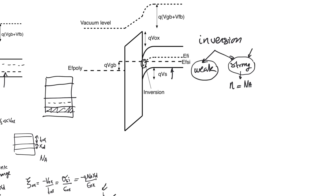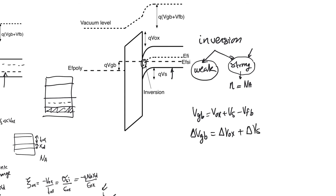There is a more fundamental difference between strong and weak inversion beyond just charge concentration — it has to do with what happens to the surface potential. Looking at Vgb equals V_oxide plus V_surface minus V_flatband: any increase in Vgb goes to either increasing V_oxide or increasing V_surface. In weak inversion, an increase in Vgb increases both V_oxide and V_surface. In strong inversion, an increase in Vgb only increases V_oxide, meaning the surface potential saturates at a certain level.